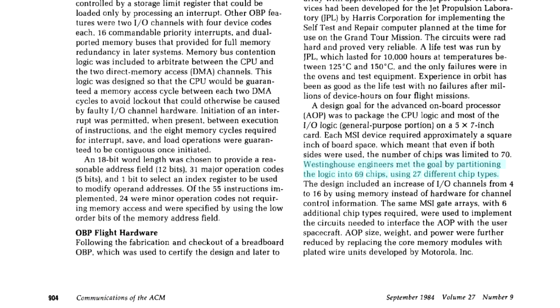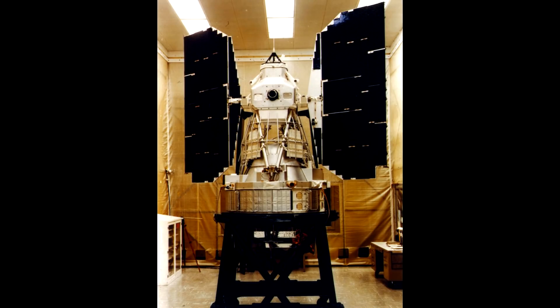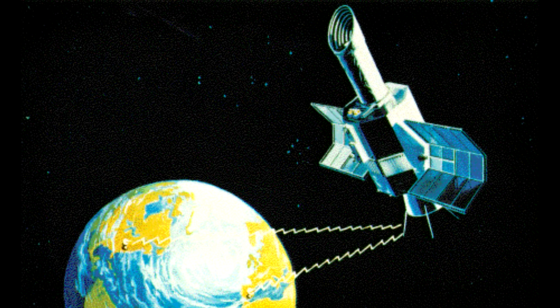They developed the advanced onboard processor, and the main improvement was using medium-level integration. They managed to take the 1,700 chips and reduce it down to 69 chips. When they built the Apollo guidance computer in the 1960s, the integrated circuits had four gates per chip; for the advanced onboard processor they had bumped that up to 130 logic gates on every chip. That computer flew in a couple of the Landsat missions and the International Ultraviolet Explorer, with about 4k of memory. There was not a lot of space to work with, and everything was hand-coded in assembly language.